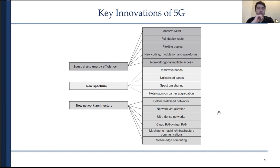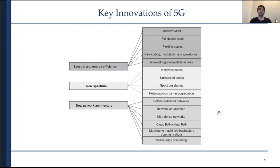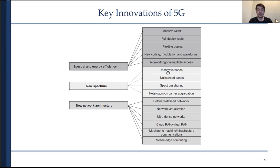The last topic in this introduction covers the key innovations of 5G. Basically, 5G incorporates many different technologies that can be roughly classified into three categories: spectral and energy efficiency, new spectrum, and new network architecture. In this tutorial, I will go through each of these technologies, beginning with new spectrum — the most foundational layer — and covering millimeter wave bands and techniques like spectrum sharing and carrier aggregation.